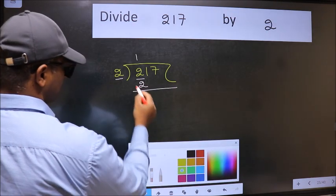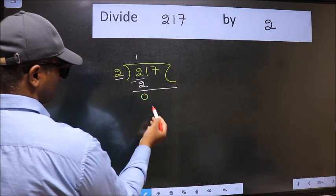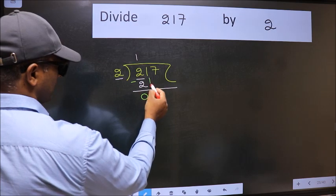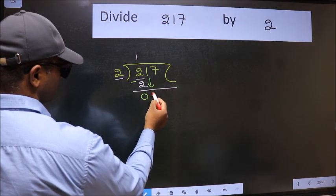Now we should subtract. We get 0. After this, bring down the next number. So 1 down.